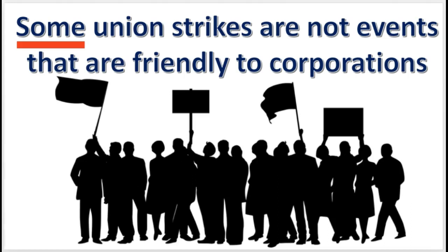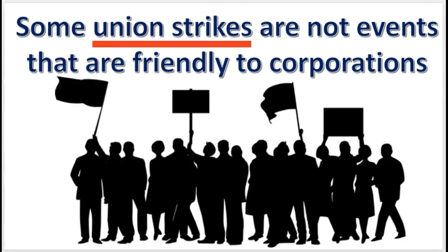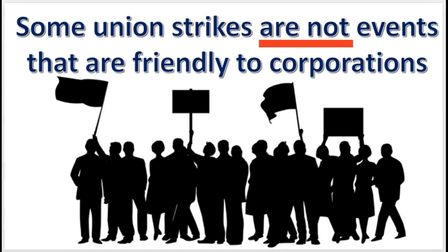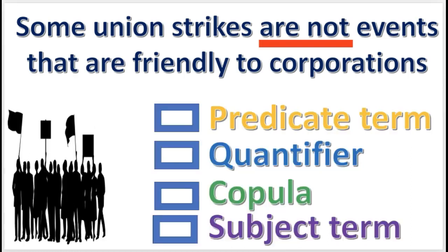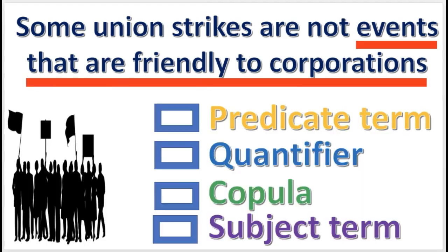Next practice problem. In this categorical proposition, what is the word some called? The quantifier. Next, what is 'union strikes' called? That's correct — the subject term. Next, what is the phrase 'are not' called? Correct — the copula. Finally, what is 'events that are friendly to corporations' called? The predicate term. It always comes at the end.